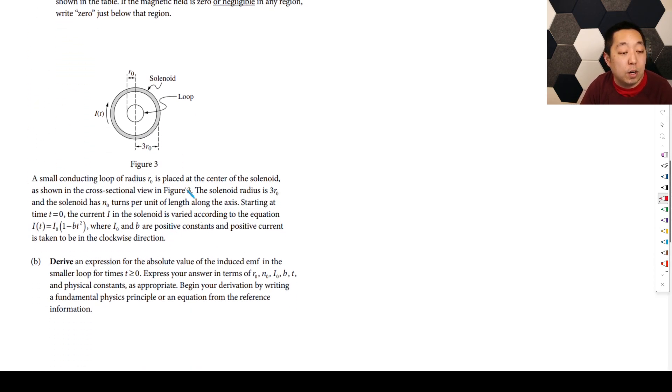A small conducting loop of radius R0 is placed at the center of the solenoid as shown in the cross-section. The solenoid radius is 3R0. The solenoid has N0 turns per unit length along the axis. Starting at time T equals 0, the current in the solenoid is varied according to the equation here, where I0 and B are positive constants, and the positive current is taken to be in the clockwise direction.